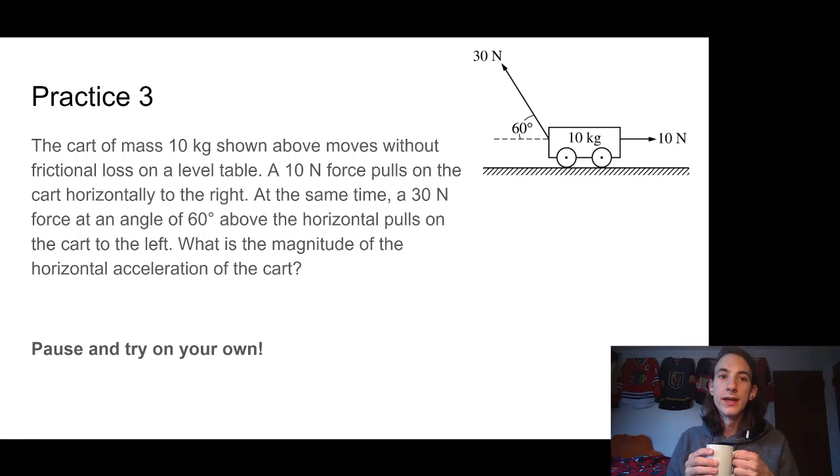Okay, so with this one we're looking at a cart of mass 10 kilograms shown above that moves without frictional loss on a level table. It's got those little wheels on it, so we know there's no friction or frictional loss in this case. A 10 Newton force pulls on the cart horizontally to the right. At the same time, a 30 Newton force at an angle of 60 degrees above the horizontal pulls on the cart to the left. What is the magnitude of horizontal acceleration of the cart?